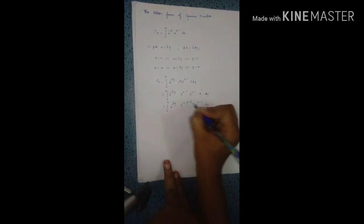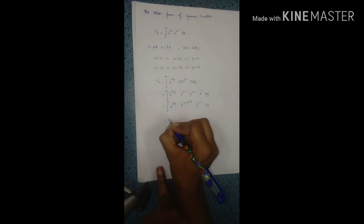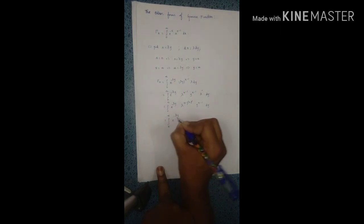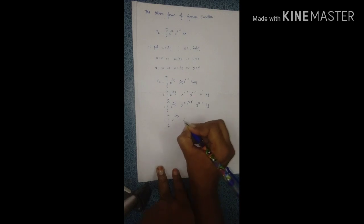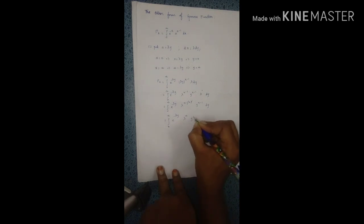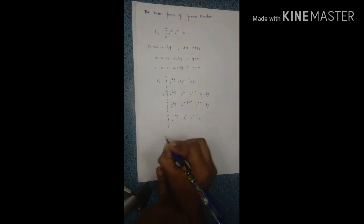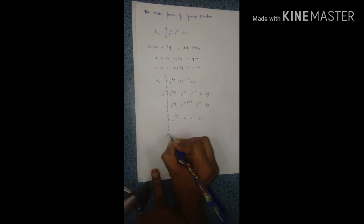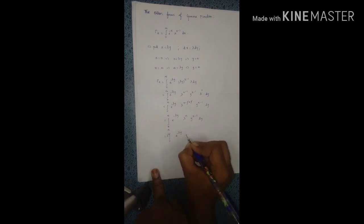Next, the exponents add up: n minus 1 plus 1 in the y terms. The integral becomes 0 to infinity of e to the power of minus lambda y times lambda to the power of n times y to the power of n minus 1, dy. Then, taking lambda to the power of n outside as a constant, we get lambda to the power of n times the integral from 0 to infinity of e to the power of minus lambda y times y to the power of n minus 1, dy.